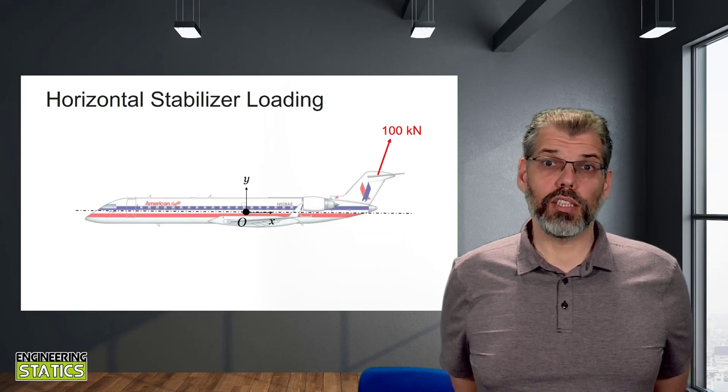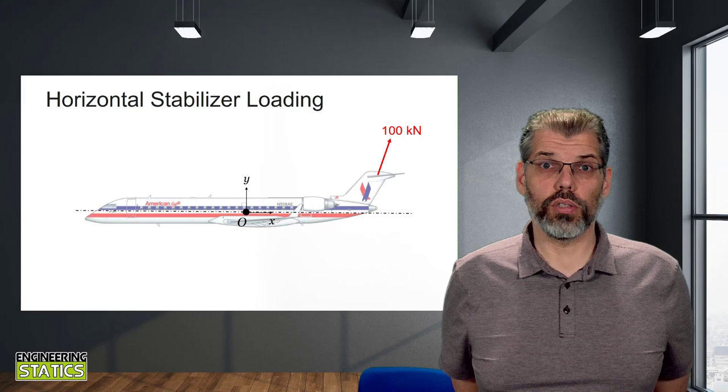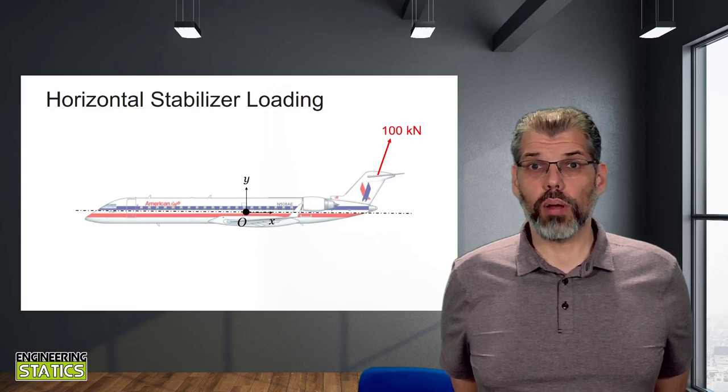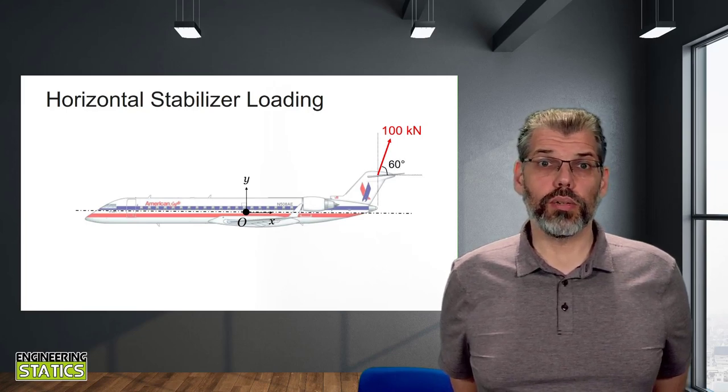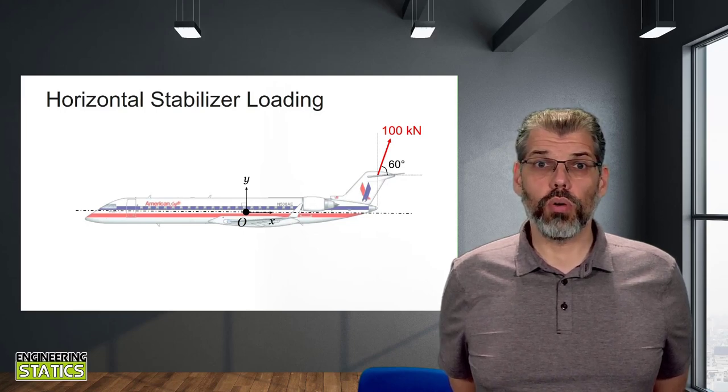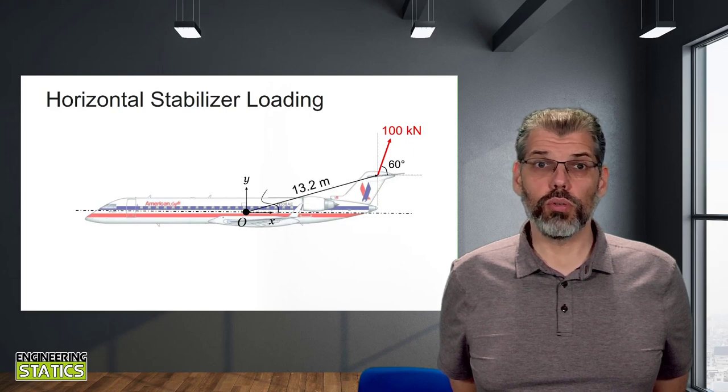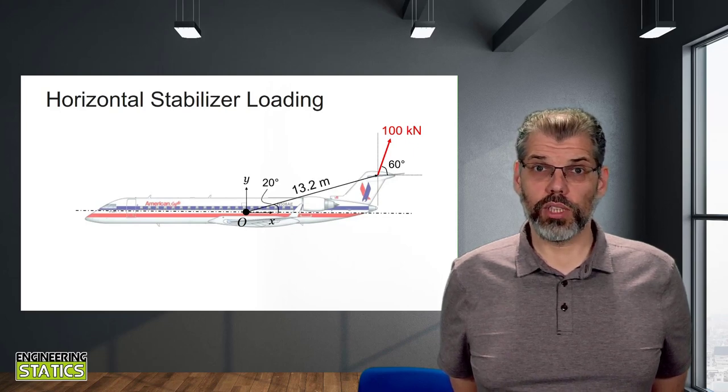Next, we need to obtain some more information about the orientation and location of the forces on the horizontal stabilizer. For this problem, our force is oriented 60 degrees counterclockwise from the x-axis. The linear distance from point O to the location of the force acting on the stabilizer is 13.2 meters, measured at an angle of 20 degrees.